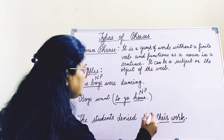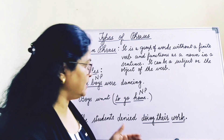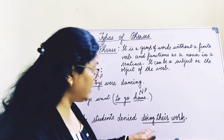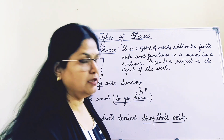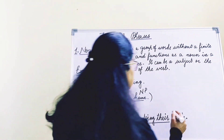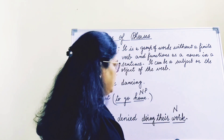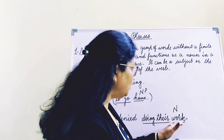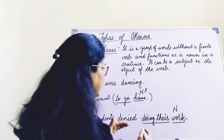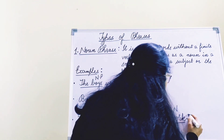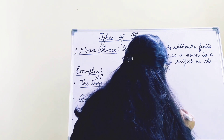Third example: 'The students denied doing their work.' The students denied — doing is not a verb, please remember this. Doing is a gerund here. Work is a noun, and 'doing their work' is modifying the word work, adding extra meaning to it. Students denied what? Doing their work. So this is again a noun phrase.